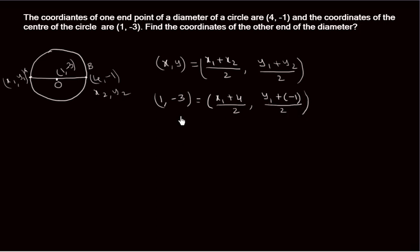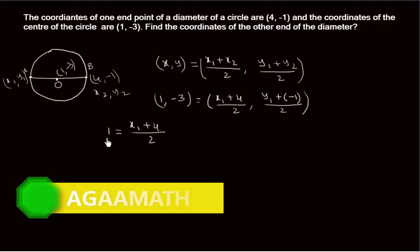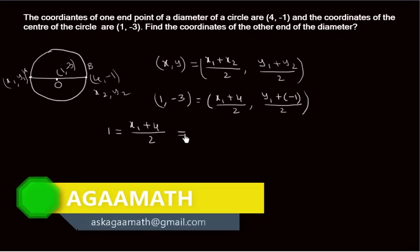We already learned in a previous class that if two coordinate pairs are equal, then the x-coordinate of one pair equals the x-coordinate of the other, and similarly for y-coordinates. So here I can write: 1 = (x1 + 4) / 2.